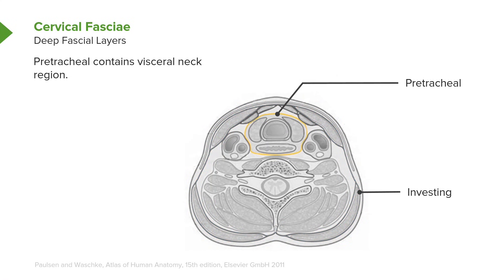The second deep fascial layer is known as the pretracheal fascia, shown in yellow. This surrounds the structures found in the visceral compartment — specifically the thyroid gland with its two lobes, the trachea in the center, and then posterior to the trachea, the esophagus.